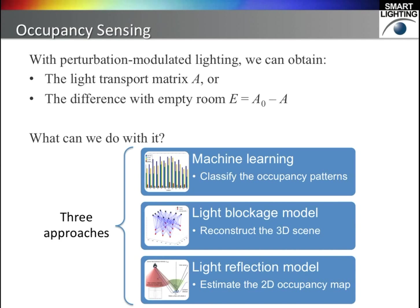Now we have introduced the perturbation modulated lighting, and we can get the matrix A, or the difference between A and A0. What can we do with it? We propose three approaches to use A to estimate the occupancy: the machine learning approach, the light blockage model approach, and the light reflection model approach.